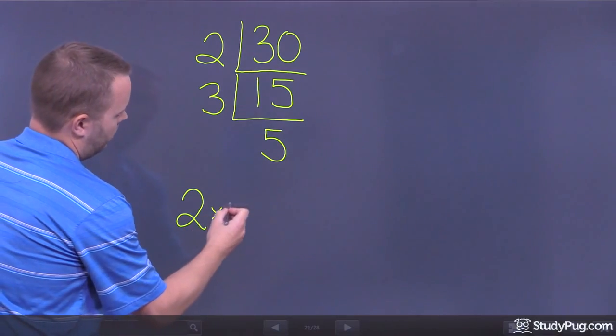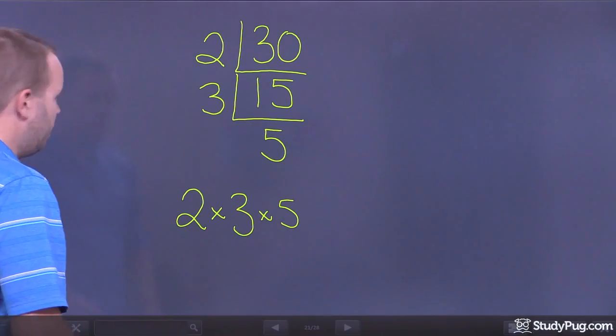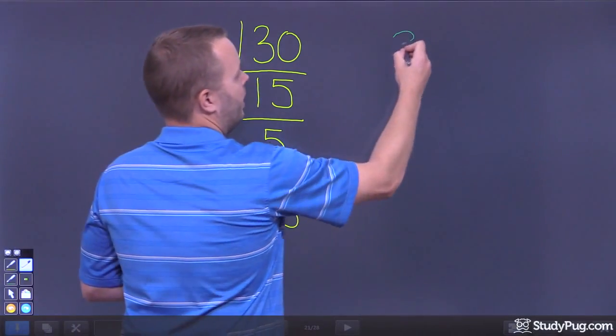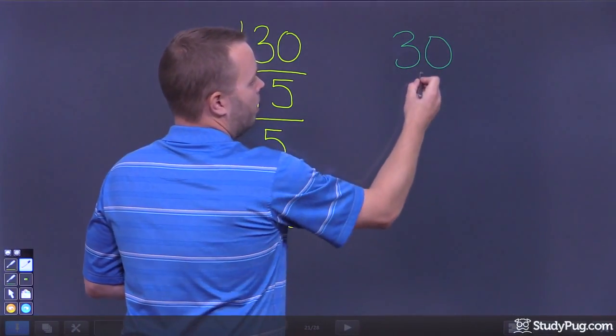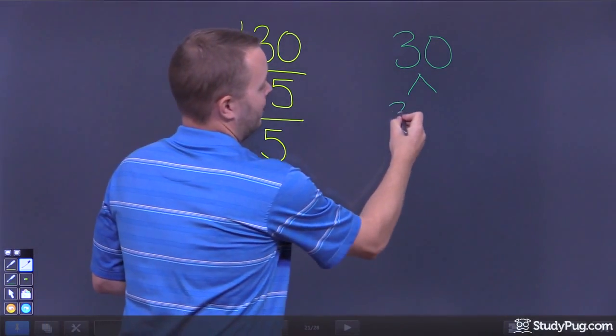So, this one would be 2 times 3 times 5. Had I gone about doing this the factor tree method, it would have worked exactly the same. 30 is, well, you can pick whatever you want. I'm going to start with 3 and 10, because they're easy.